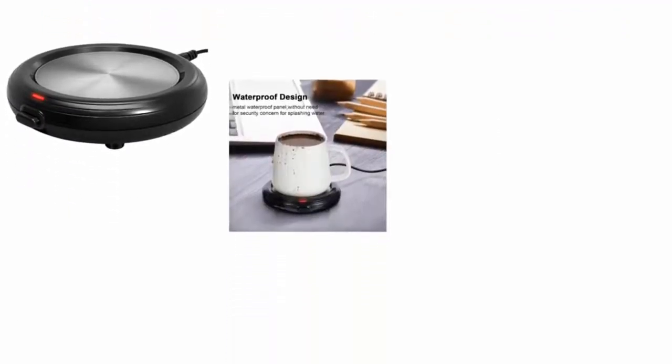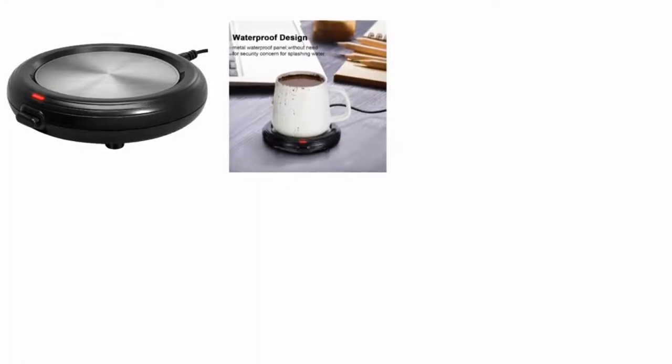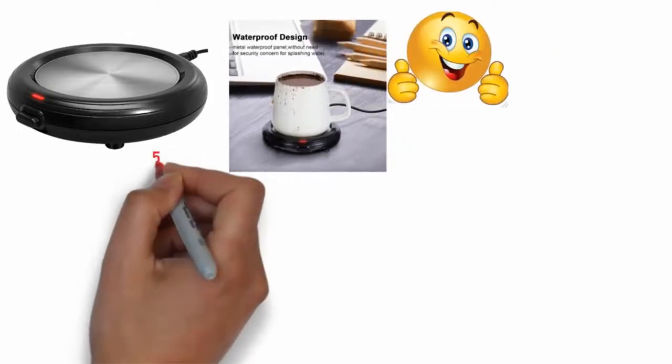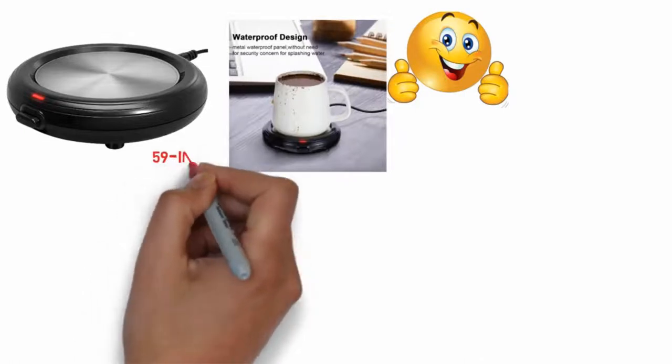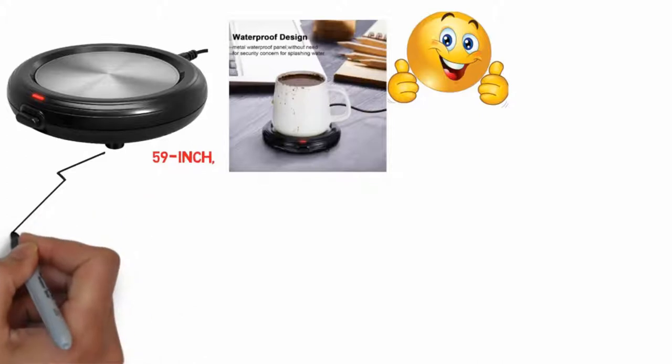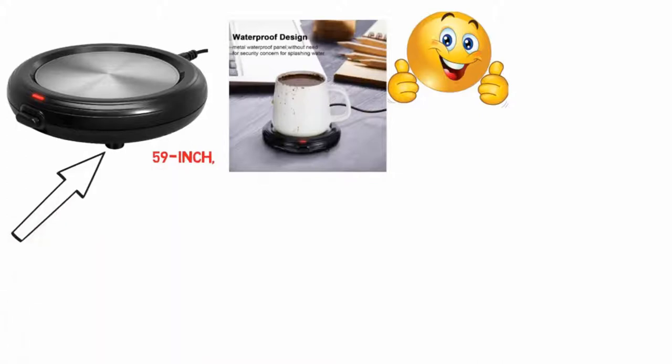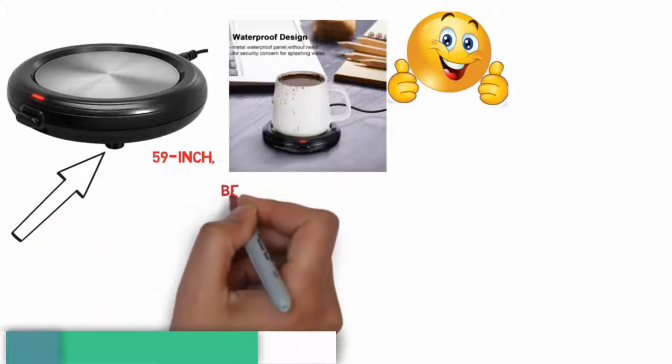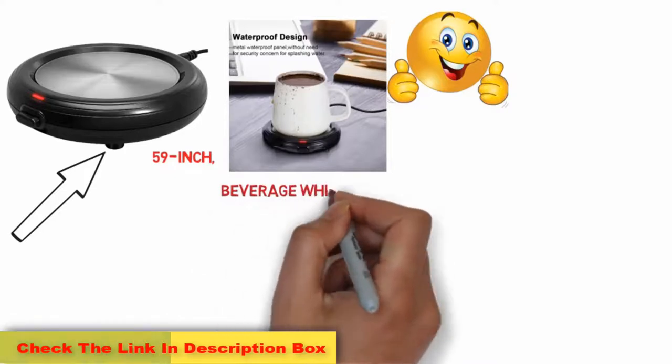It can keep the beverage between 104 degrees Fahrenheit and 140 degrees Fahrenheit. With the help of a wire of 59 inches, you can easily connect it to the electrical socket. It is stain resistant and you can clean it with a damp cloth. It comes along with lids which ensure that you can cover your beverage while heating.